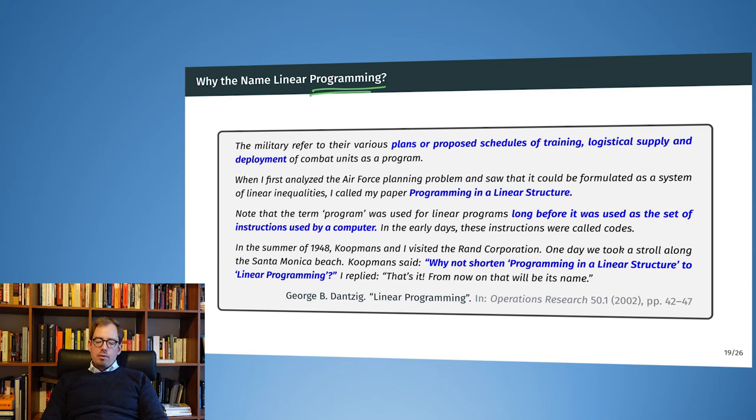Originally, the military referred to plans or schedules for training, logistics, deployment of troops, and so on, as a program. The optimization of the programs of the military was one of the very first applications for the tools that we today call linear programming and for the type of problem that we today call linear programming. George Dantzig, which is one of the grandfathers of optimization, he first called this approach programming in a linear structure.